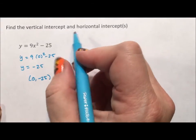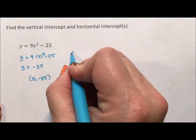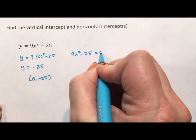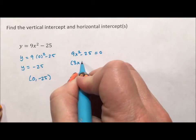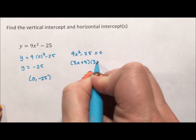For the horizontal intercept, we set y equal to 0. So 9x squared minus 25 equals 0, which factors as (3x + 5)(3x - 5).